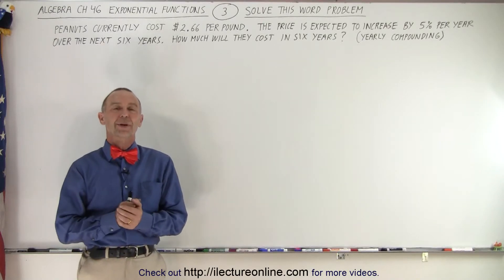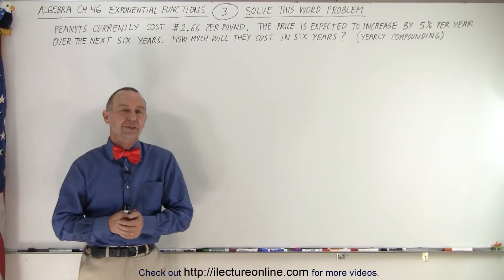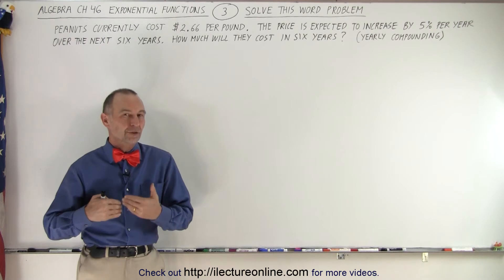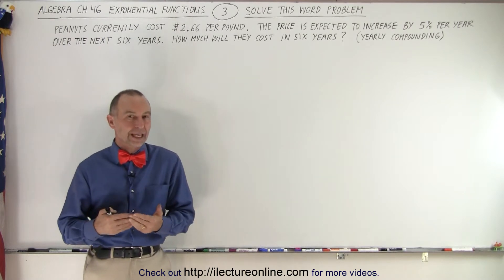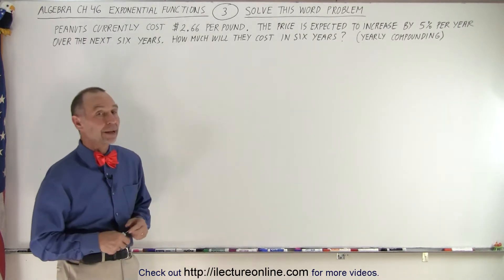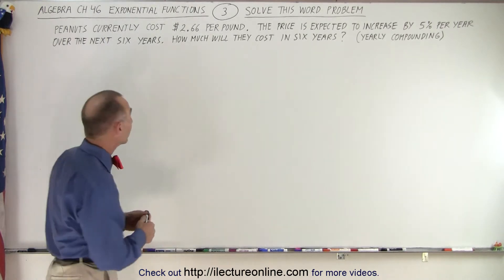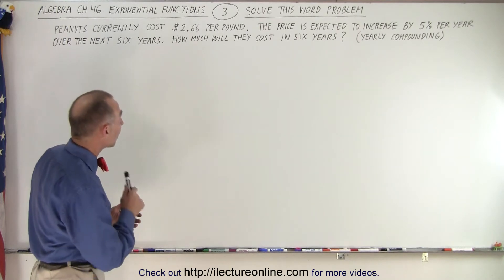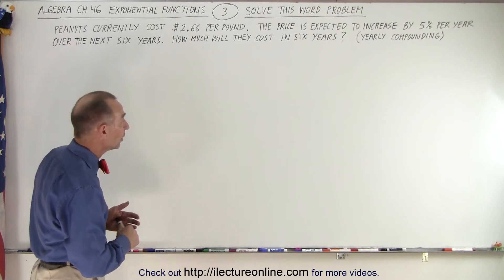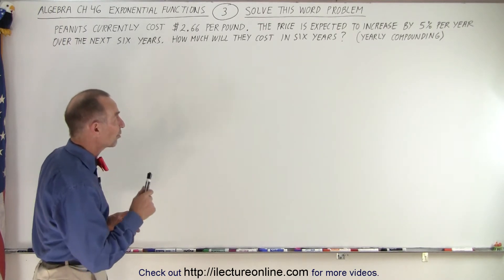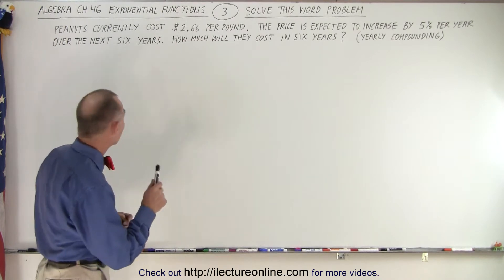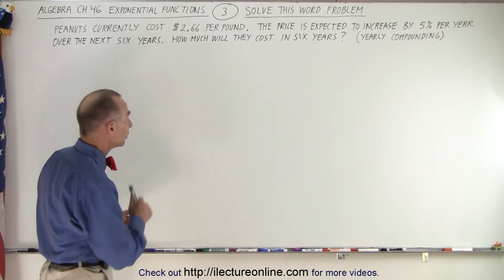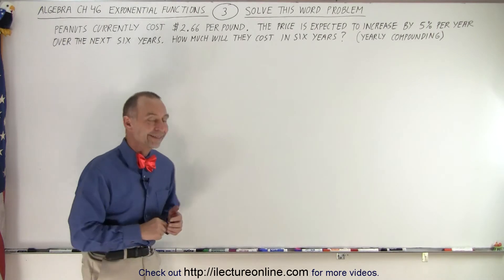Welcome to our lecture online. Here's an interesting problem that can be solved using exponential functions, known as yearly compounding. Peanuts currently cost $2.66 per pound. The price is expected to increase by 5% per year over the next six years. How much will they cost in six years?